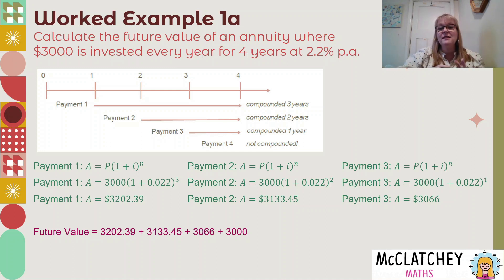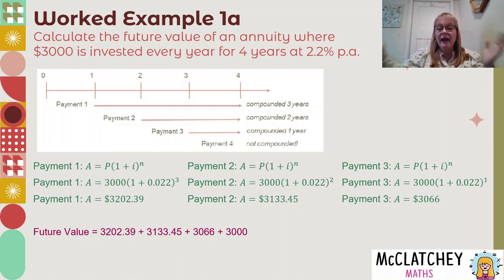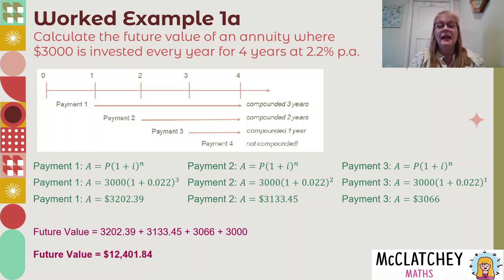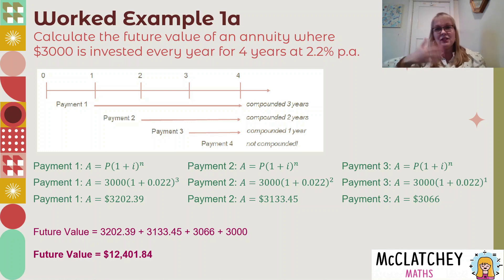We take the amount of payment one after the full four years, add payment two, add payment three, and add that final payment of $3,000. We end up with a future value of $12,401.84.